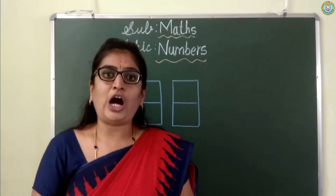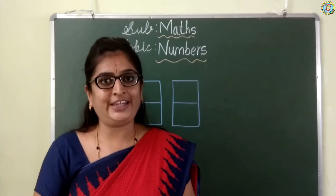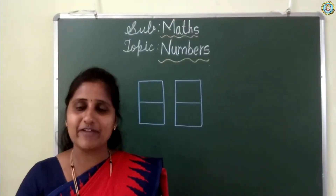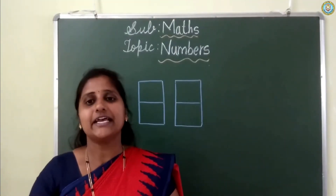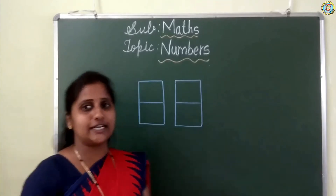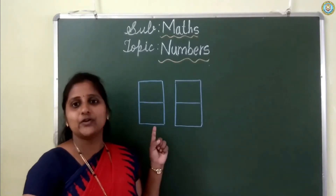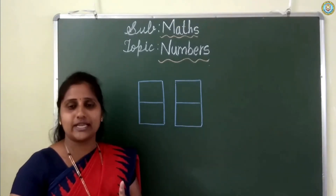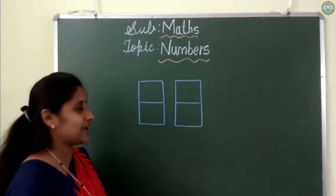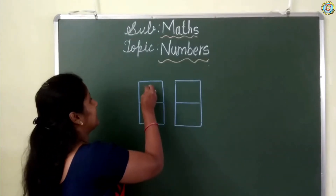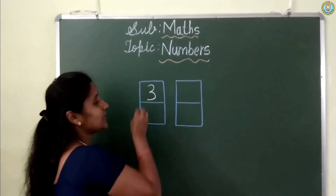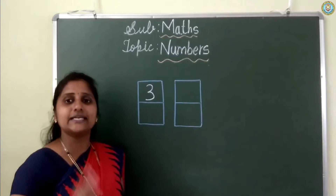Now you will learn how to write number 3 and 4 in the square box book. Dear children, I will teach you how to write number 3 and 4. Come on children, look at the blackboard. Look carefully children. Number 3 in square box — you will figure out how to write number 3.